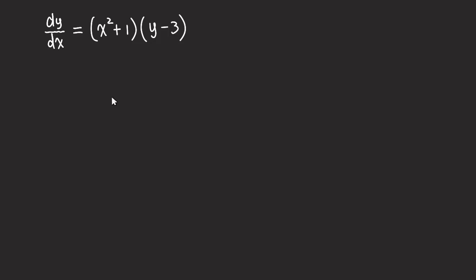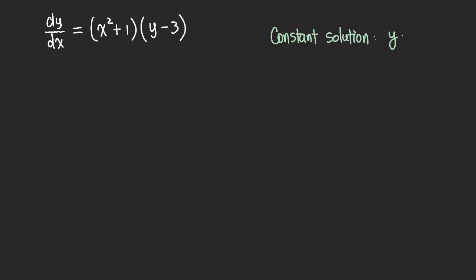Separating the variables is actually really simple. All we need to do is to get the y minus three to this side. To get y minus three to the left-hand side, we need to divide by it, so we need to make sure that it's non-zero. When we have the equation in this form, this y minus three tells us that there was a constant solution for this differential equation, which is y equals three.